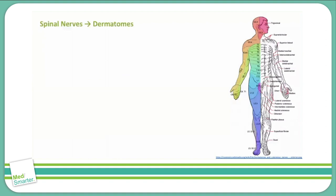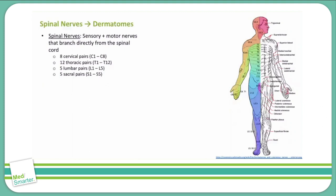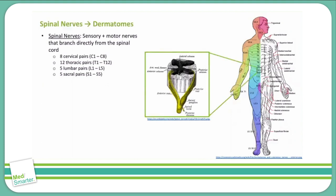Dermatomes and the anatomy of dermatomes are an important concept to understand for USMLE Step 1 and beyond. The spinal nerves are what give rise to the dermatomes. Spinal nerves are the major nerve branches that stem directly from the spinal cord and exit between the vertebrae. They carry both sensory innervation and motor innervation.